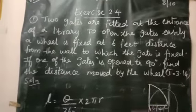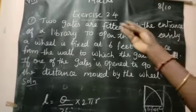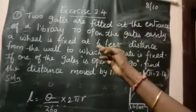Dear students, good morning to all. Now we see the exercise 2.4. Problem one: Two gates are fitted at the entrance of a library.